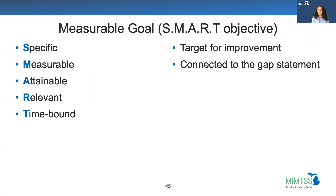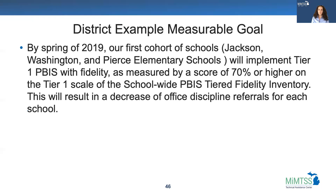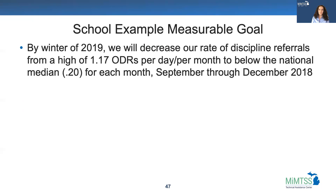The measurable goal is the target for improvement — it further defines the 'where we want to be' part of the gap statement. Here's a district example measurable goal. And here's the school example.